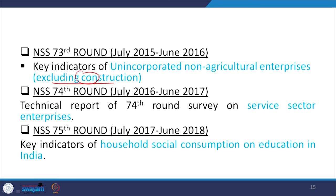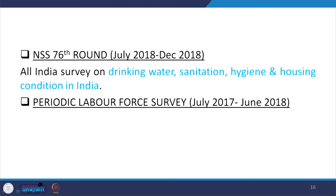The 74th round (2016–17, July to June) was on service sector enterprises — this is the latest enterprise information available in the Indian context. The 75th round is on social consumption related to education in India. The 76th round covers drinking water, sanitation, hygiene, and housing conditions. The most famous and most debated dataset is the Periodic Labour Force Survey (PLFS), July to June 2017–18.